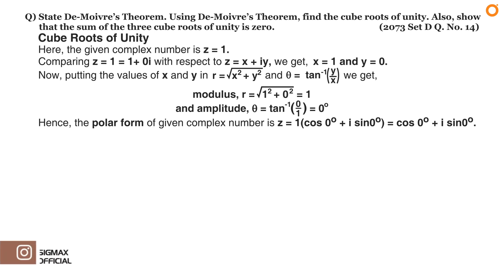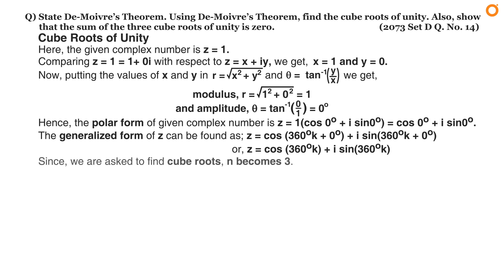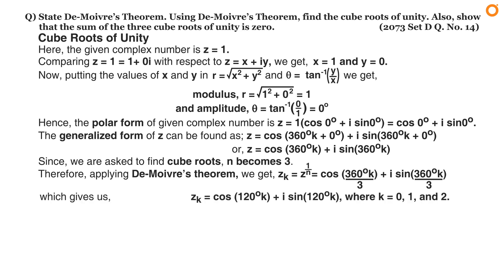In step two, generalize the polar form by adding 360k. The generalized form of z is z equals cos(360k) plus i sin(360k). In step three, apply De Moivre's theorem to the generalized form. Since we are finding cube roots, n equals 3, so z_k equals cos(360k divided by 3) plus i sin(360k divided by 3), which simplifies to z_k equals cos(120k degrees) plus i sin(120k degrees), where k equals 0, 1, and 2.